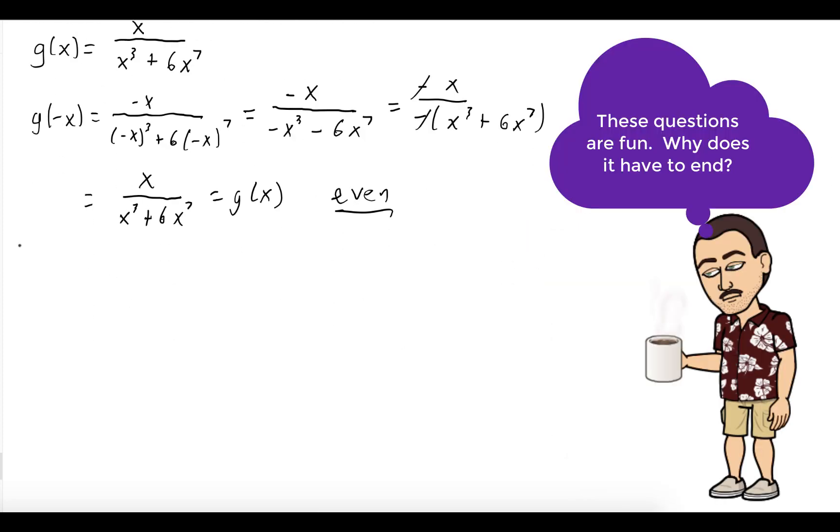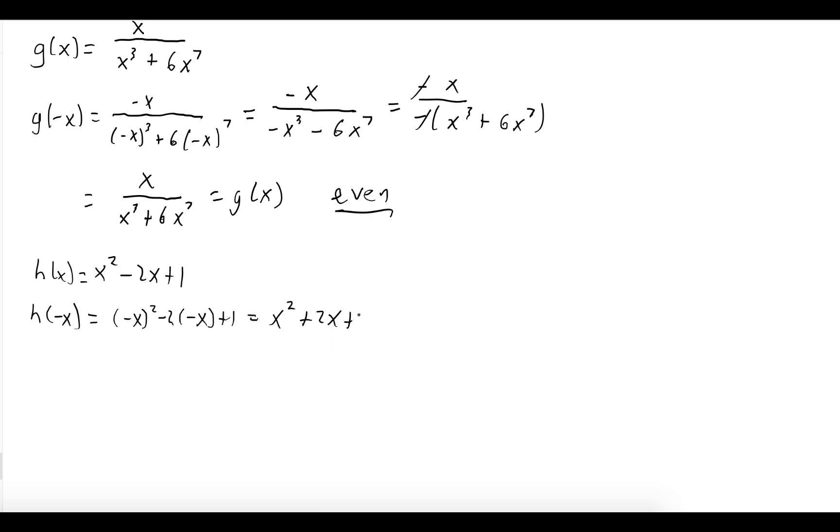And so we'll do the same thing here with h. Evaluate h(-x), and we get x² + 2x + 1. This is not equal to h(x), and it's not equal to -h(x), so h is neither even nor odd.